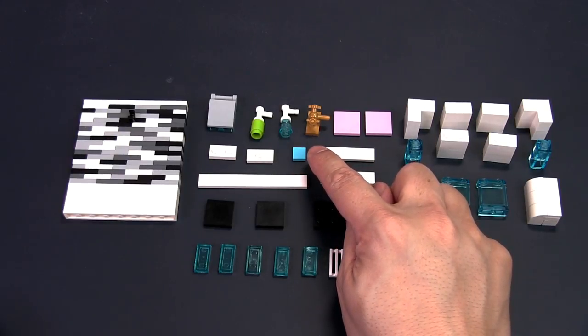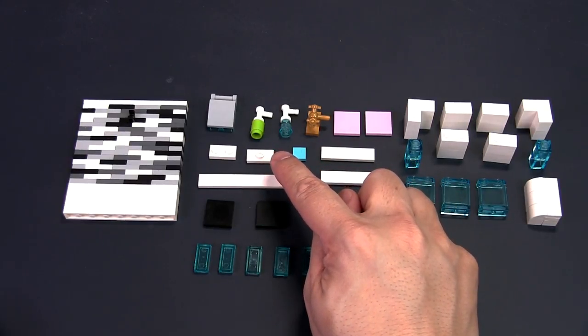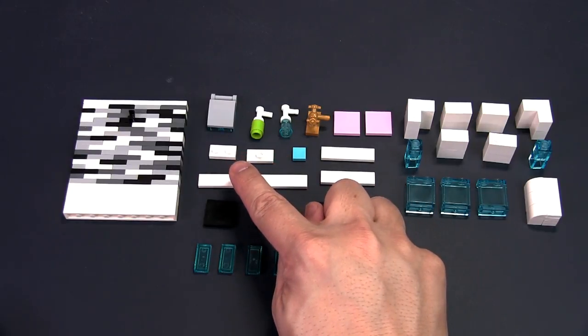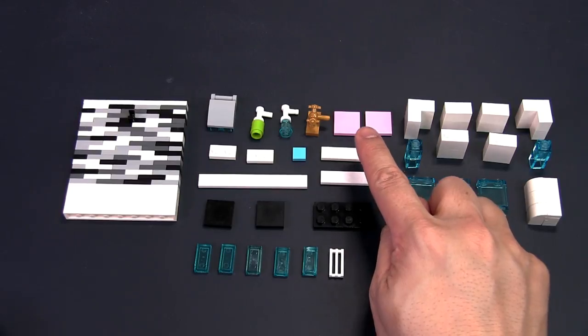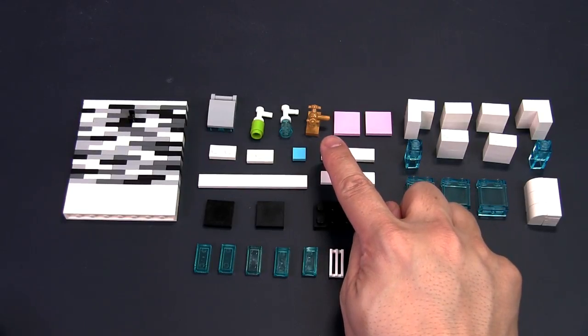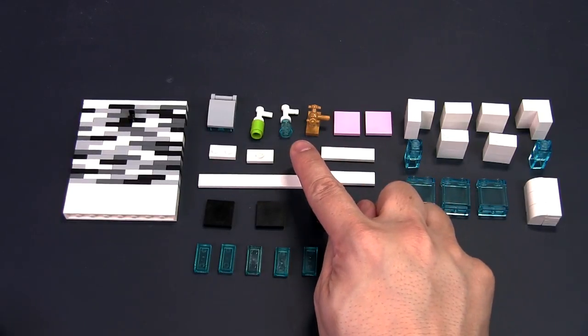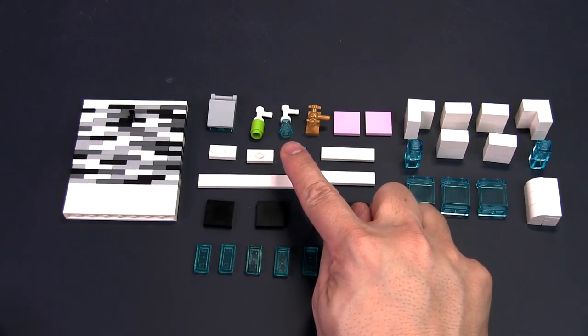A 1x1 blue tile, a 1x2 jumper plate, a 1x2 plate, two 2x2 pink tiles, an ornate tab piece, two round brick and tab assemblies for the shampoo and conditioner bottles.